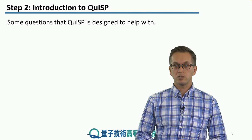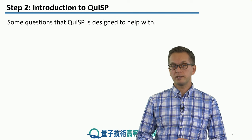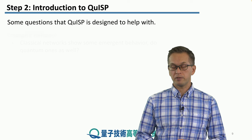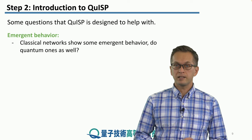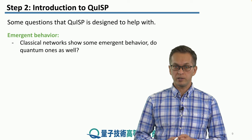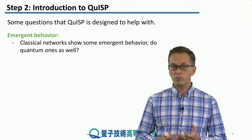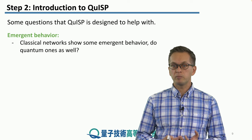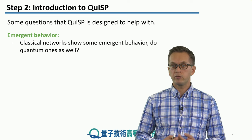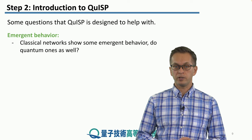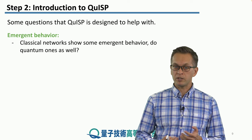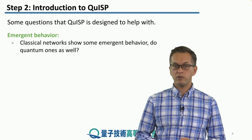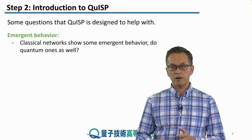So, some of the questions that QISP is designed to help you with: first of all, classical networks are also very complex systems, and we observe some emergent behavior which was before unpredicted. Do quantum networks have the same emergent behaviors, or are they different?